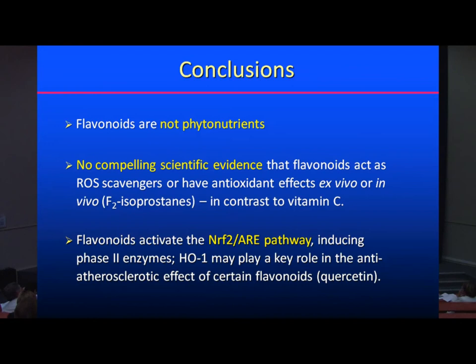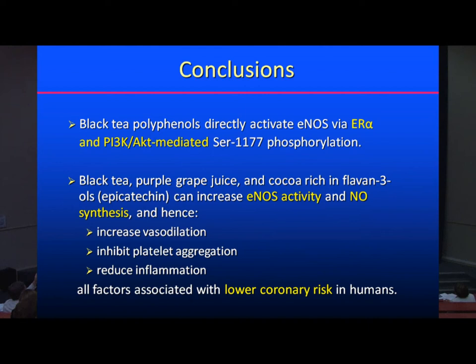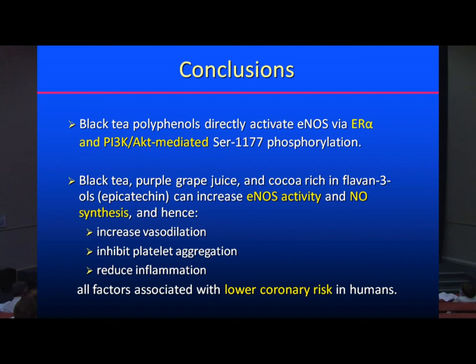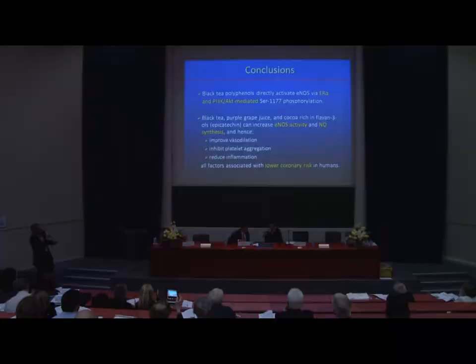To conclude: flavonoids are not phytonutrients. There is no evidence that flavonoids act as free radical scavengers or have antioxidant effects ex vivo or in vivo — in contrast to vitamin C, which is a strong dietary antioxidant. Flavonoids activate the NRF2/ARE pathway; they are xenobiotics that induce phase 2 enzymes including HO-1, which may play a key role in the anti-atherosclerotic effects of certain flavonoids such as quercetin. Black tea polyphenols directly activate eNOS via estrogen receptor alpha and PI3K/Akt-mediated serine 1177 phosphorylation. Most importantly, in humans, black tea, purple grape juice, and cocoa — rich in flavonoids, particularly epicatechin — increase eNOS activity and NO synthesis, improving vasodilation, inhibiting platelet aggregation, and reducing inflammation, which together could explain lower coronary risk.